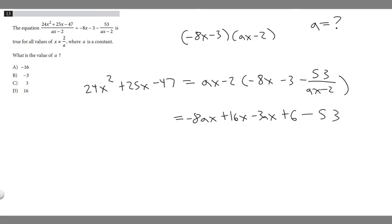So we have this side of the equation. So 24x squared plus 25x minus 47 is equal to all this. And so what you should notice is that 24x squared plus 25x minus 47 is equal to minus 8ax. And then right here this 6 and minus 53, what's going to happen is they're going to combine to minus 47. So you can see the mirroring, right? You have minus 47 minus 47.